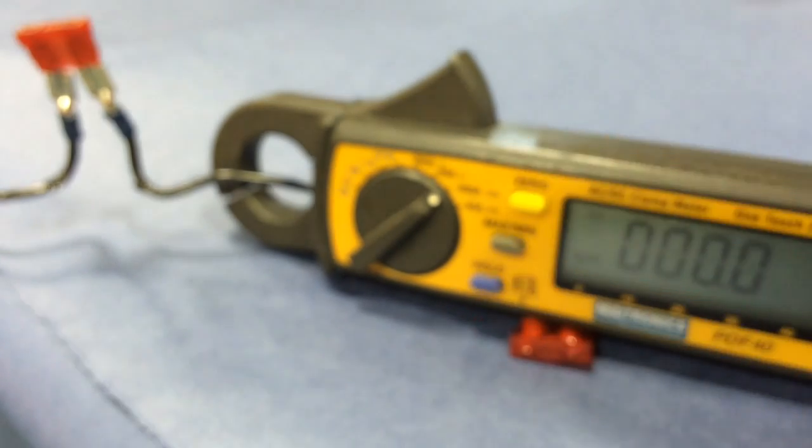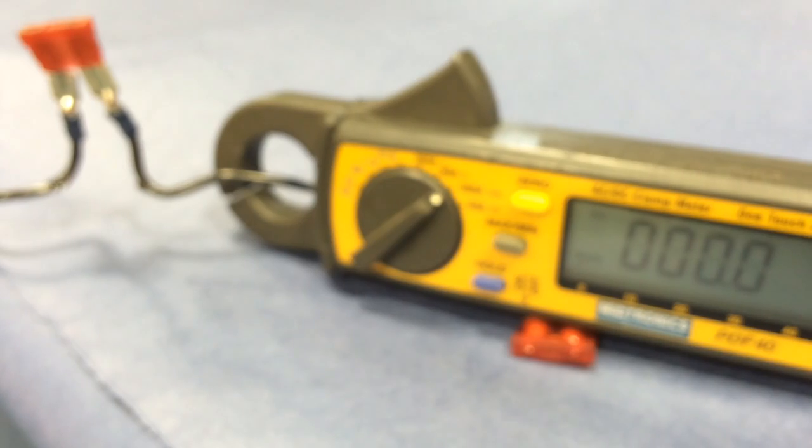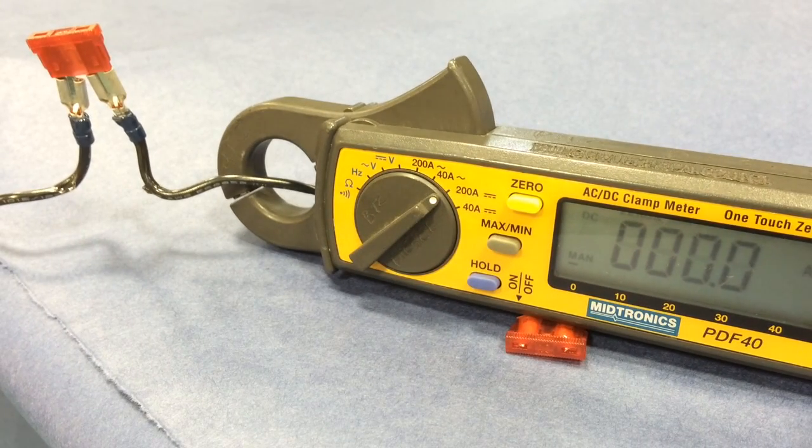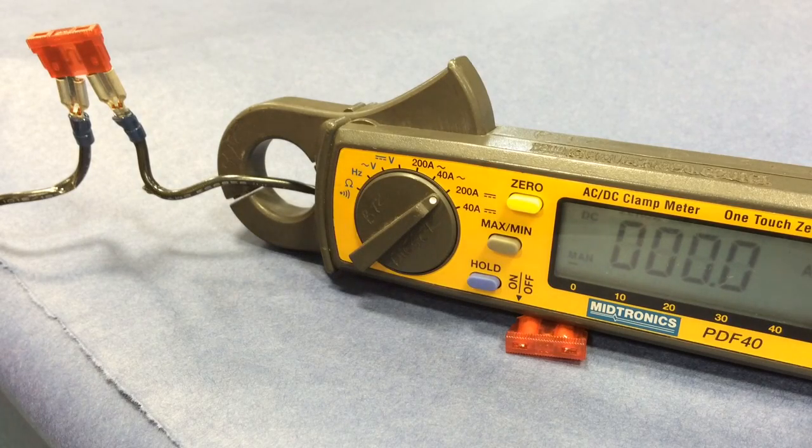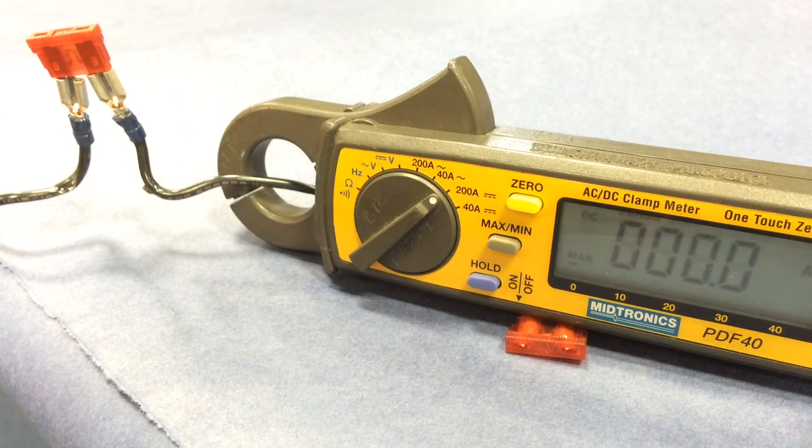We're going to load this fuse up. Here we're focused in on the clamp on ammeter. You can watch the fuse. I'm going to load the circuit slowly.